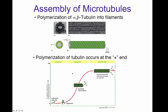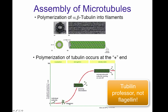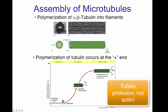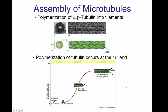Polymerization of microtubules occurs at the plus end of the microtubule. Subunits will come together forming oligomers, and those oligomers eventually will form a growing tubule. More alpha and beta tubulin will be added until the entire microtubule is constructed.